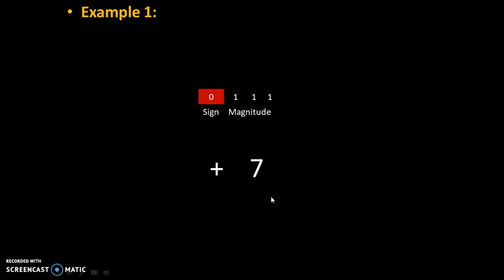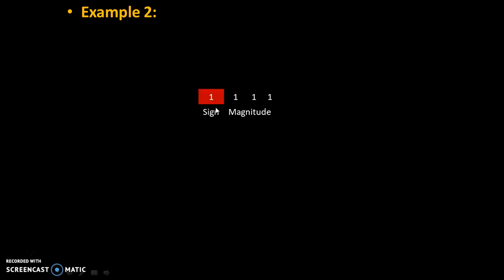So how do we indicate minus? Pay attention on the next example. Here the number is 1 1 1 1. The first digit, the MSB, indicates the sign and the remaining digits indicate the magnitude. The magnitude 1 1 1 is again 7, and the MSB 1 indicates minus sign — so 1 1 1 1 is minus 7 in decimal.